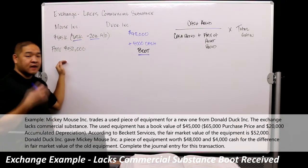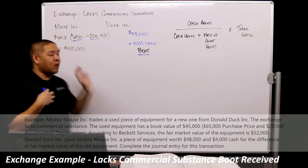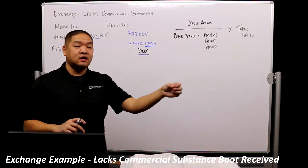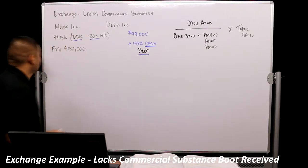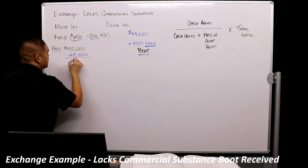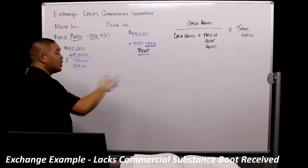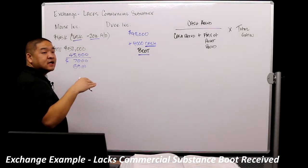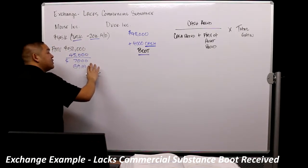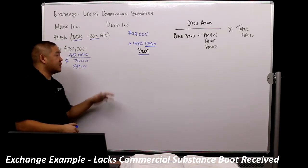Boot is received by the mouse. If I'm the mouse, I'm going to have to include some of that gain. GAAP says that if there is some cash received, we have to recognize a portion of the gain. We're giving up a $52,000 piece of equipment that's on our books for $45,000, which means our gain is going to be $7,000. GAAP says that because we receive $4,000 in cash, it doesn't mean we have to recognize all $4,000 as gain — even though we have a $7,000 gain and the cash received of $4,000 is underneath the $7,000.